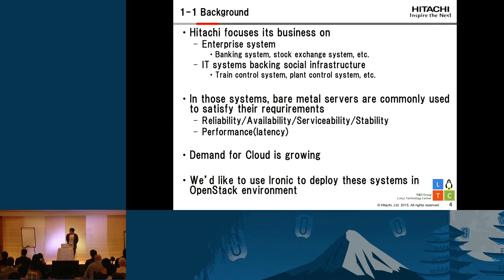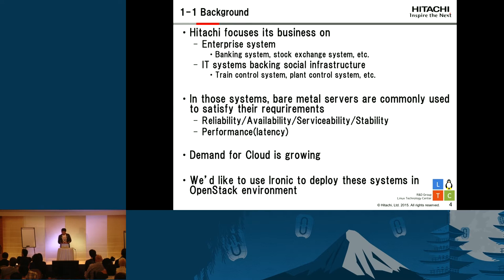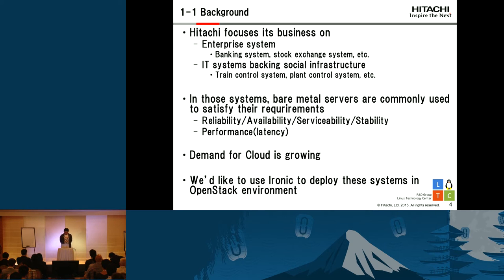Let's move on to the introduction. The background: our company focuses our business on enterprise systems and IT systems back in social infrastructure. In those systems, bare metal servers are commonly used to satisfy their requirements. Those systems have really hard requirements for reliability, serviceability, and stability. And also they need some performance, in particular latency. But on the other hand, even in those kinds of systems, demand for cloud is growing, so we'd like to use Ironic to deploy these systems in an OpenStack environment.